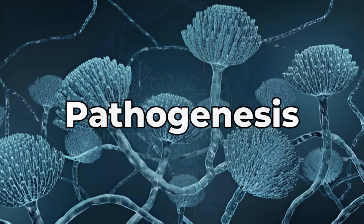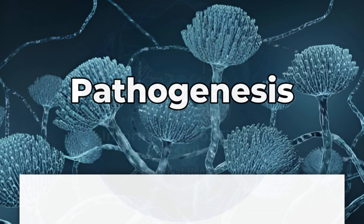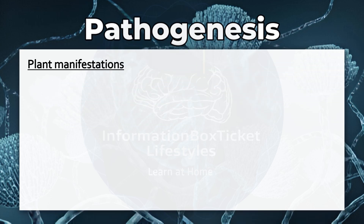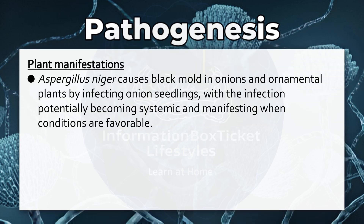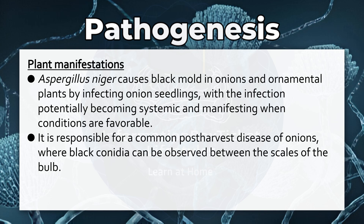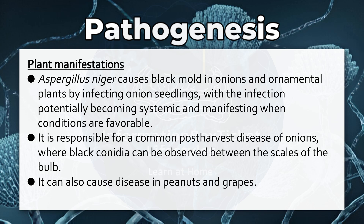Pathogenesis of Aspergillus niger — Plant Manifestations. Aspergillus niger causes black mold in onions and ornamental plants by infecting onion seedlings, with the infection potentially becoming systemic and manifesting when conditions are favorable. It is responsible for a common post-harvest disease of onions, where black conidia can be observed between the scales of the bulb. It can also cause disease in peanuts and grapes.